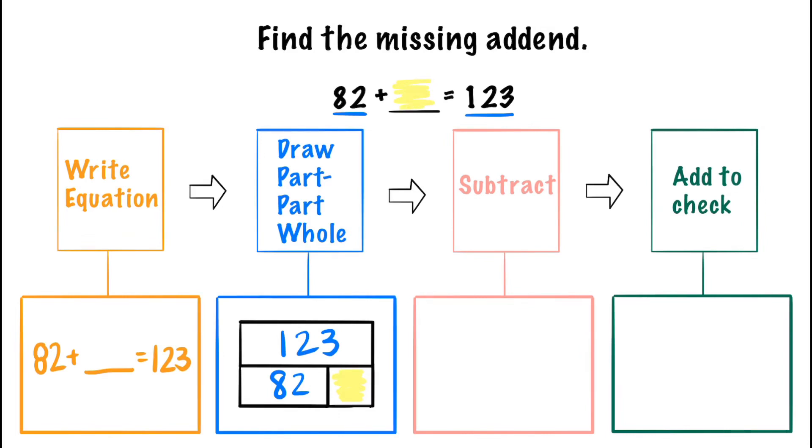We're going to do that by doing step three which is to subtract. We know our whole is 123 and we know one of the parts is 82 so we can go ahead and subtract that which gives us a difference of 41 which means the other part is 41. So we can go ahead and write that in.